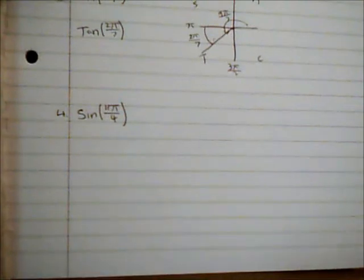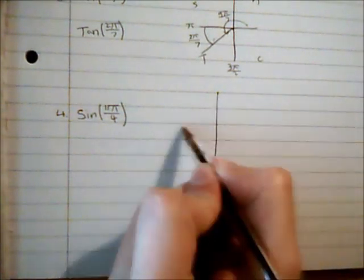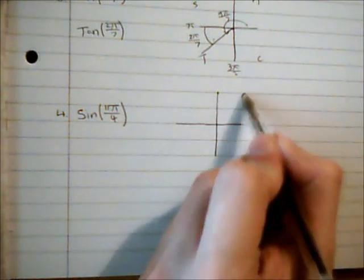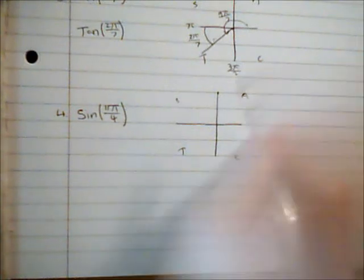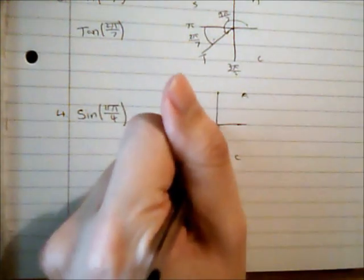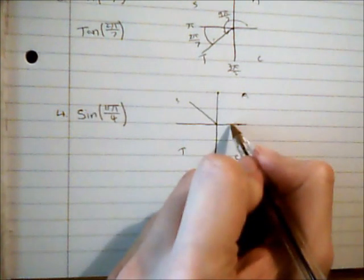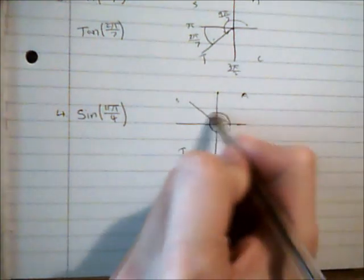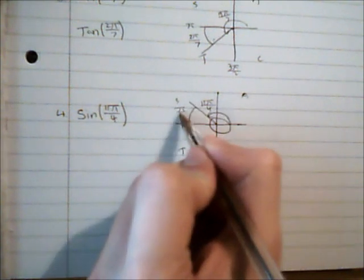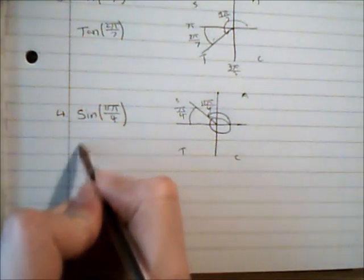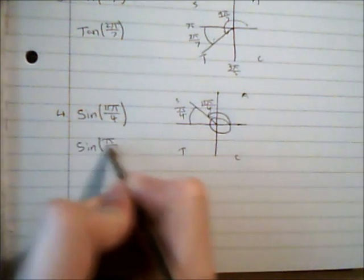And then sin of 11 pi by 4. So 8 pi by 4 would be a complete revolution. 12 pi by 4 would then be a revolution and a half. So this is not quite a revolution and a half. So it's going to be over this way somewhere. But it's actually representing all the way around and back again. And that's 11 pi by 4 which makes this angle here pi by 4. So sin of 11 pi by 4 is equivalent to sin of pi by 4. And in this quadrant the sine is positive.